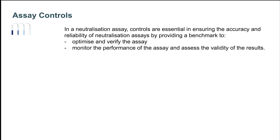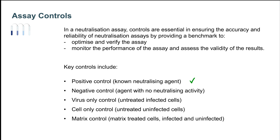Different types of controls should be included in a neutralization assay. The positive control, which is a serum, antibody, or molecule with known antiviral activity. The negative control, which is a serum, antibody, or molecule with no neutralizing activity. The virus-only control, which consists of untreated infected cells and which provides the highest level of infection with no inhibition. The cell-only control, which consists of untreated uninfected cells and which provides the 0% infection and therefore the background level. And finally, if needed, a matrix control in which cells, infected and uninfected in the presence of the matrix, are compared to cells infected and uninfected in standard assay media.